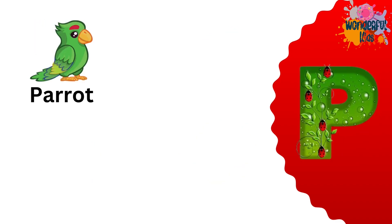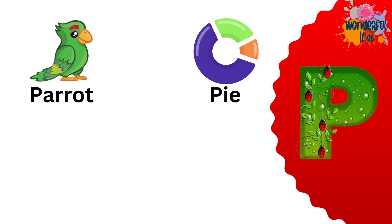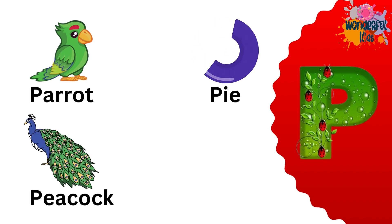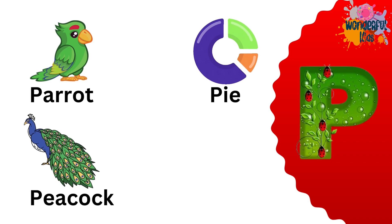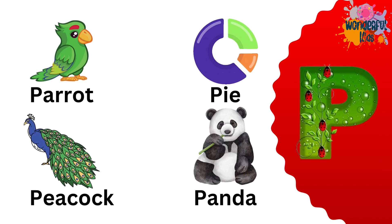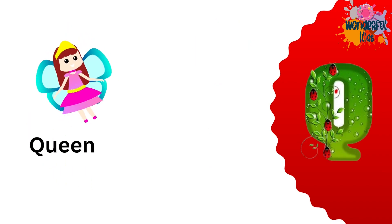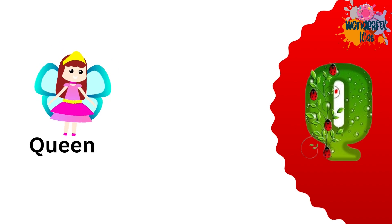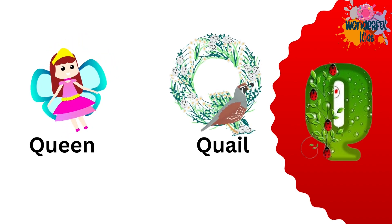P for parrot. P for pie. P for peacock. P for panda. Q for queen. Q for quail.